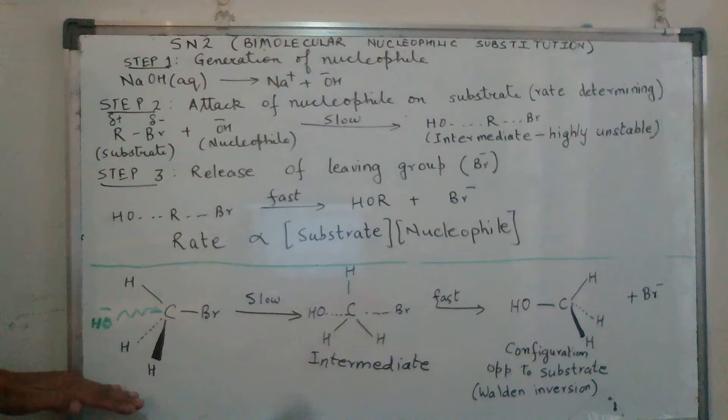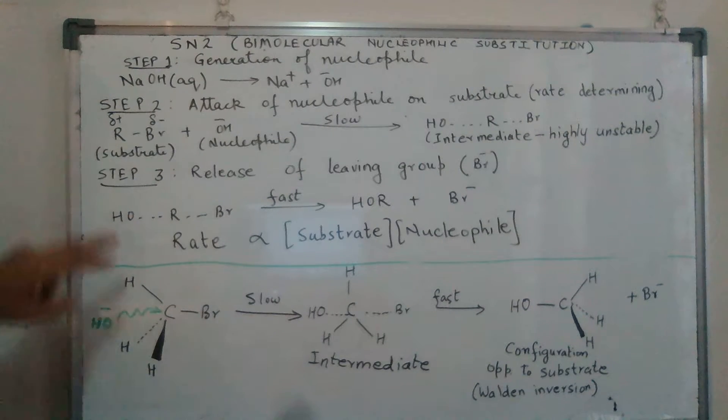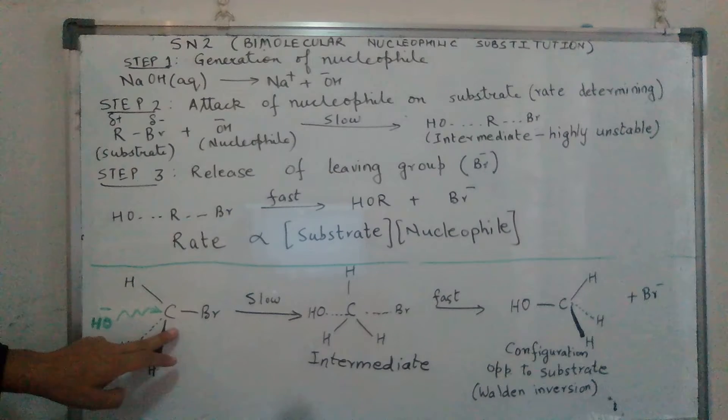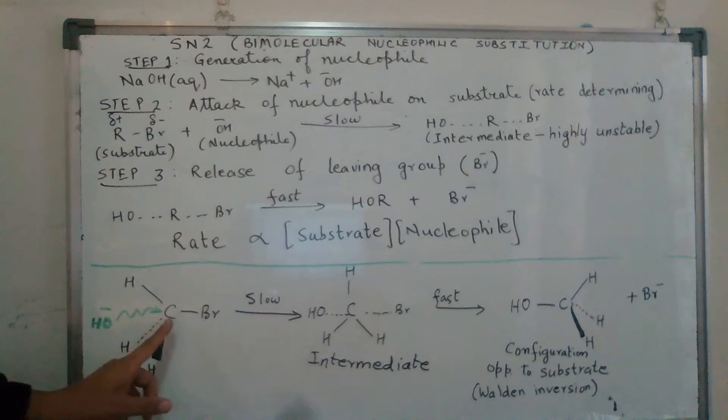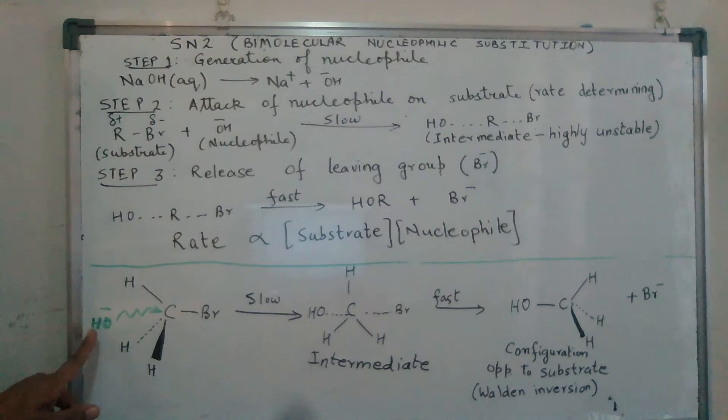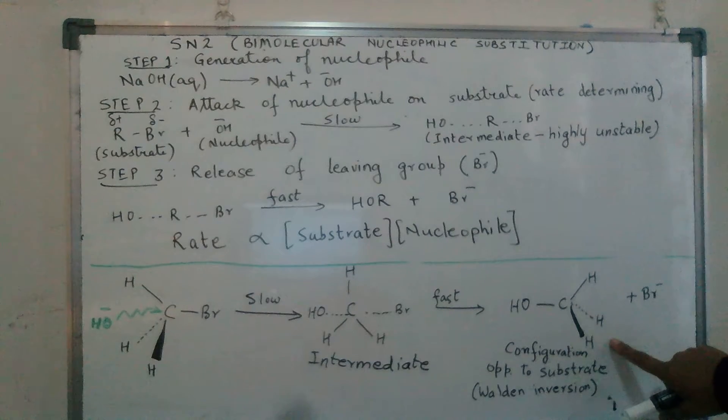Here we have depicted the alkyl carbon in a more expanded form to convey another interesting point in this bimolecular nucleophilic substitution reaction, and that is the inversion of configuration. We have a tetrahedral carbon over here that gets attacked by a nucleophile. We have an intermediate pentavalent carbon generation turning to the final product, an alcohol.